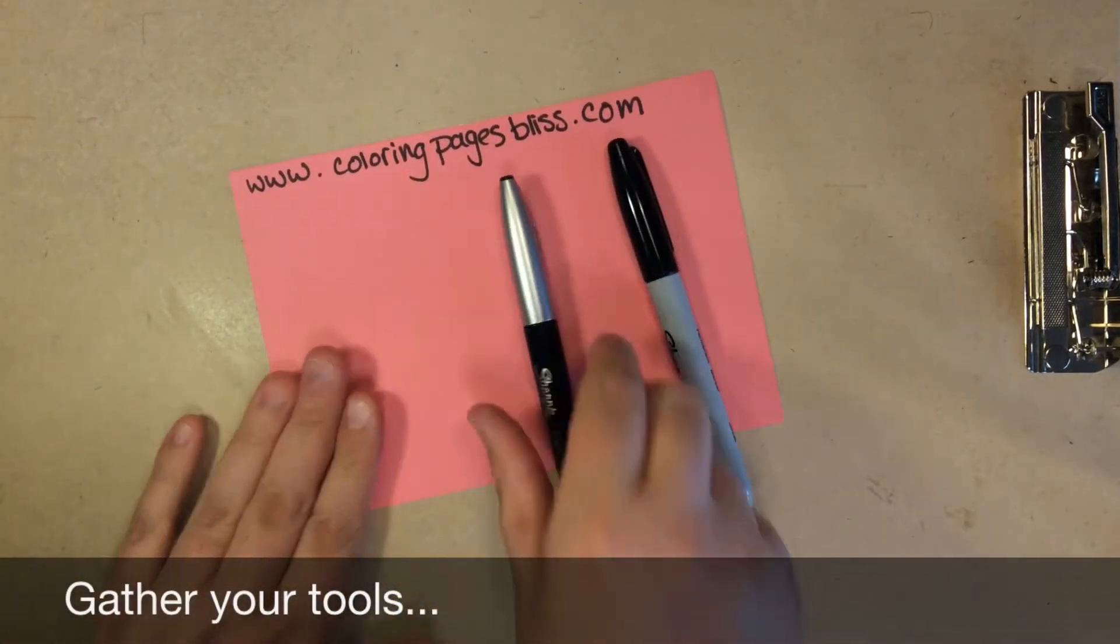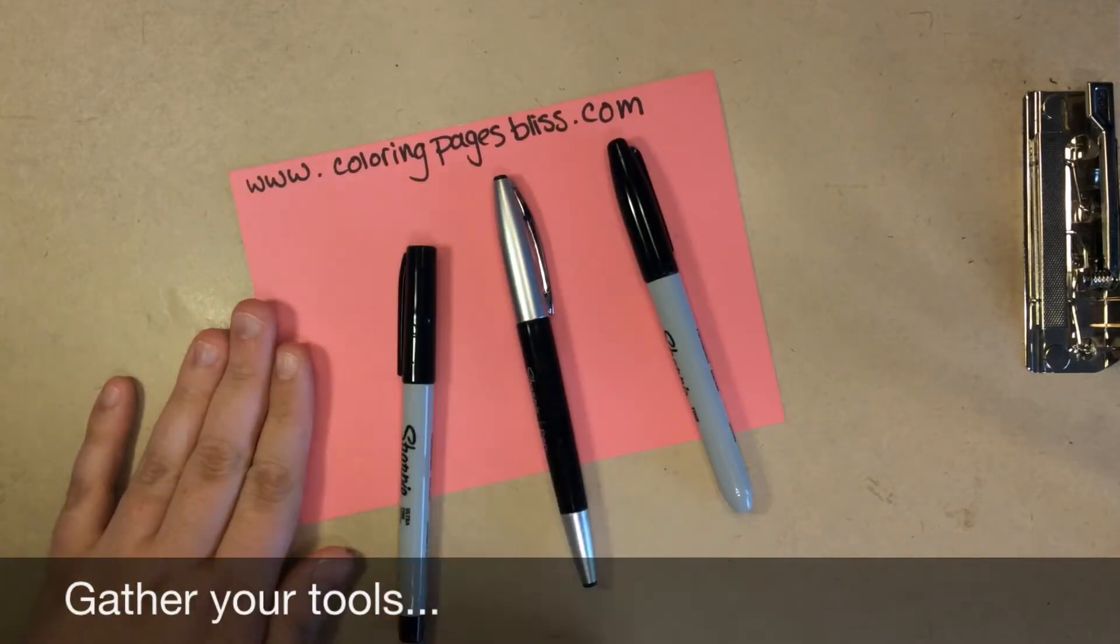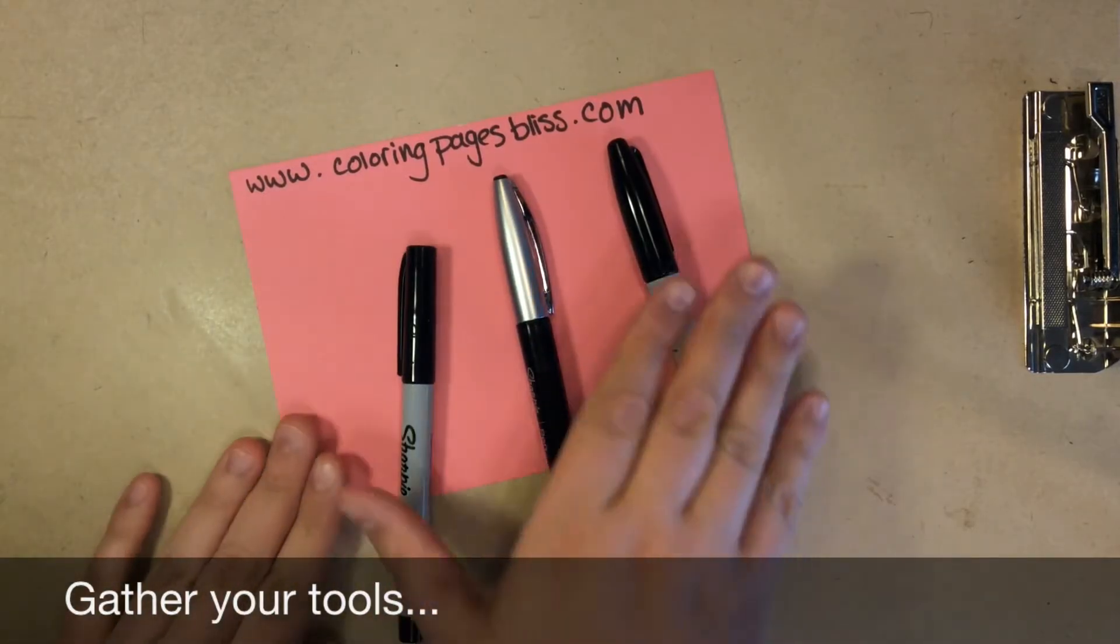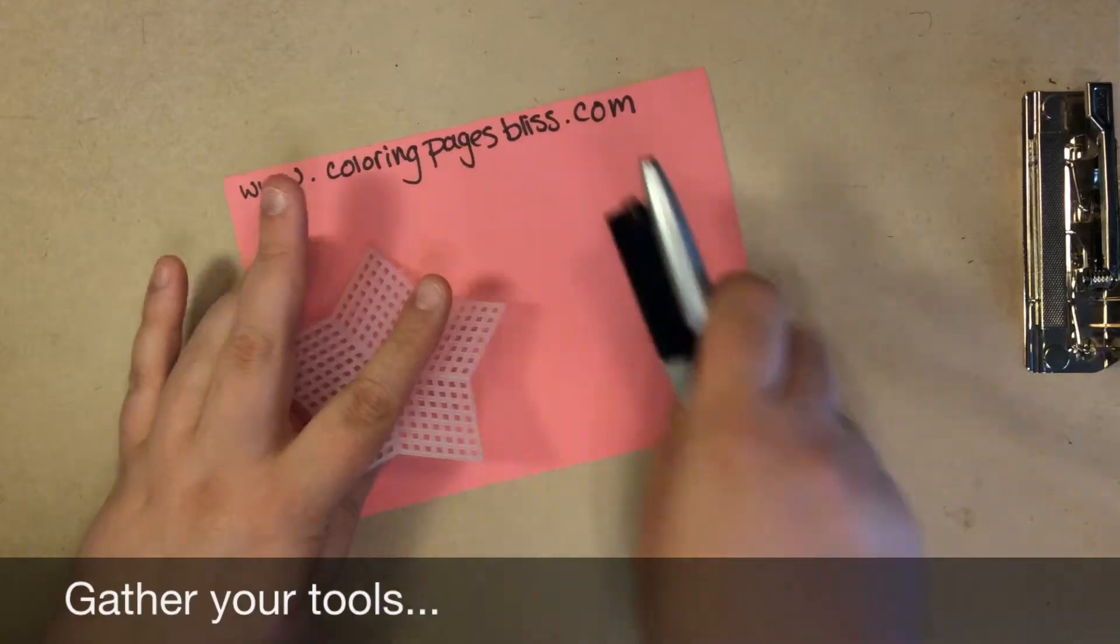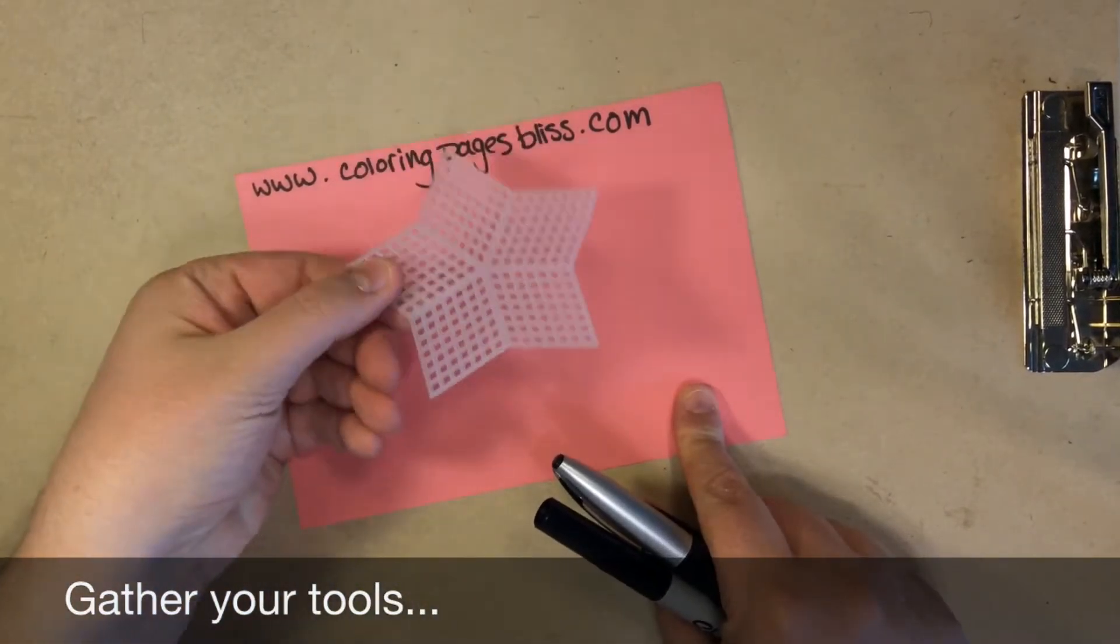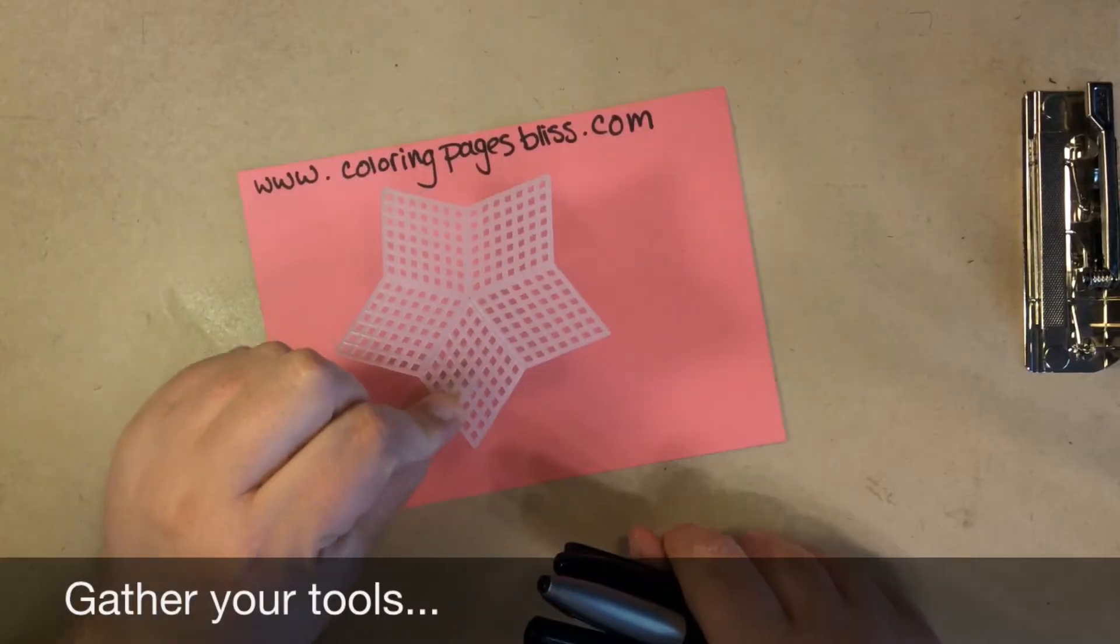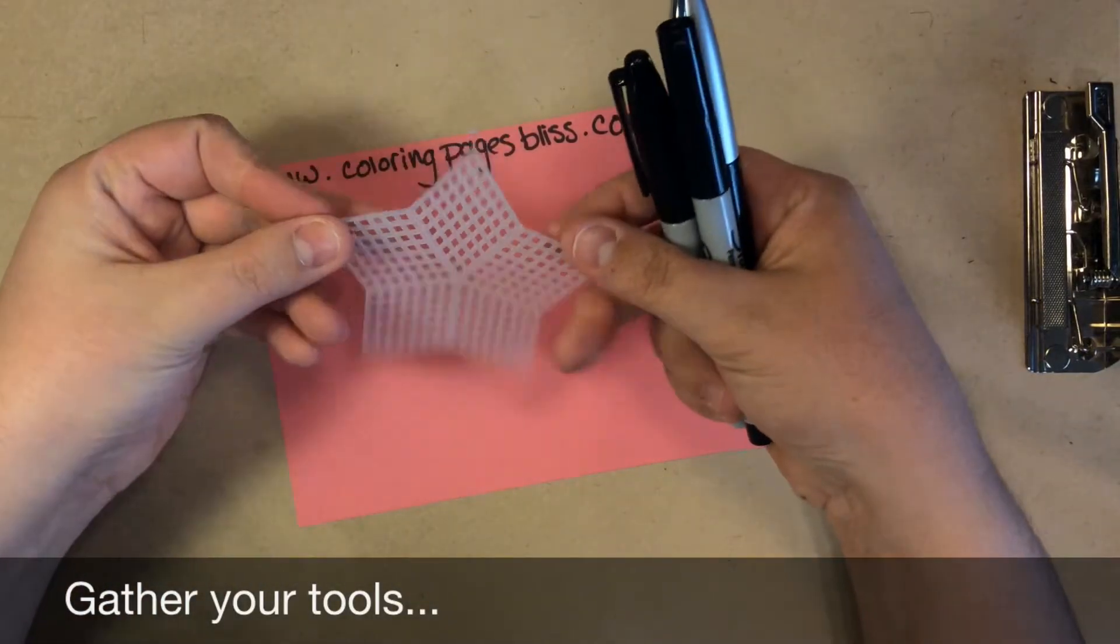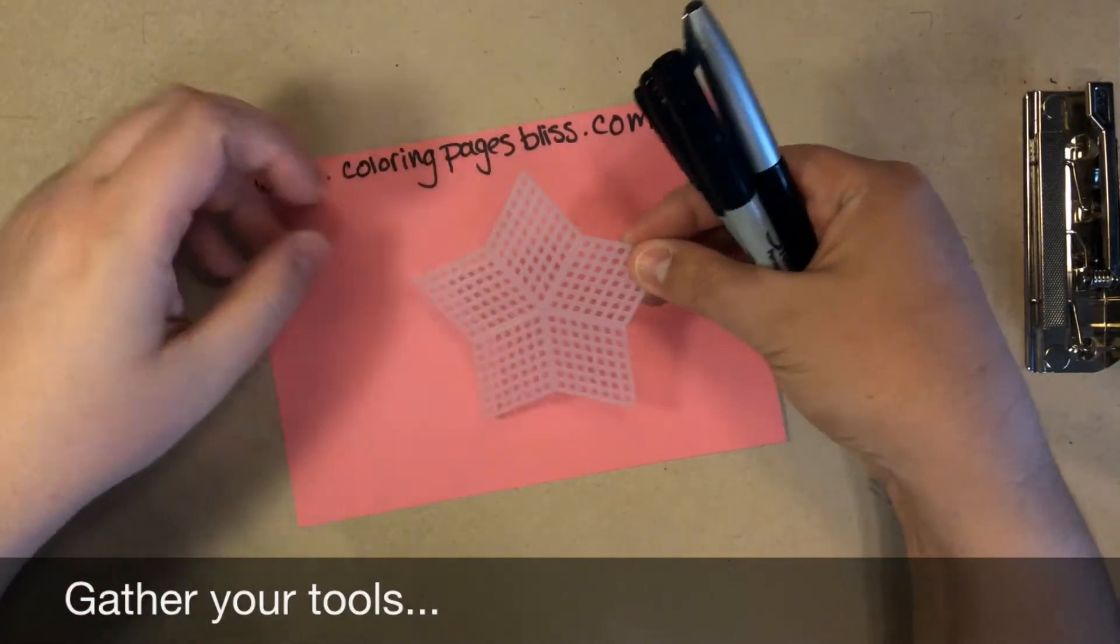For this doodle, I'll be using three different felt-tipped pens, each with a little bit different size tip so I can get different effects. And I'm going to be using this little plastic canvas star that I picked up at my craft store. You can use a cookie cutter or any other shape you have at home that you can trace.